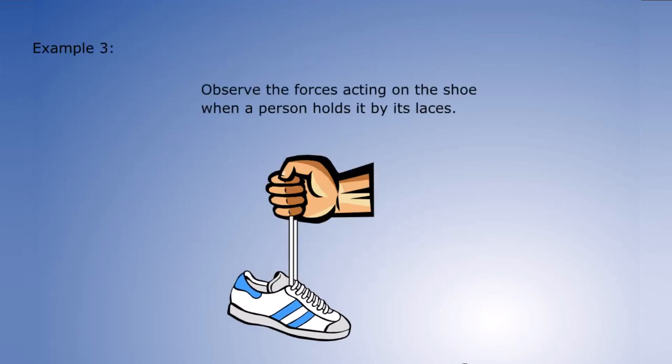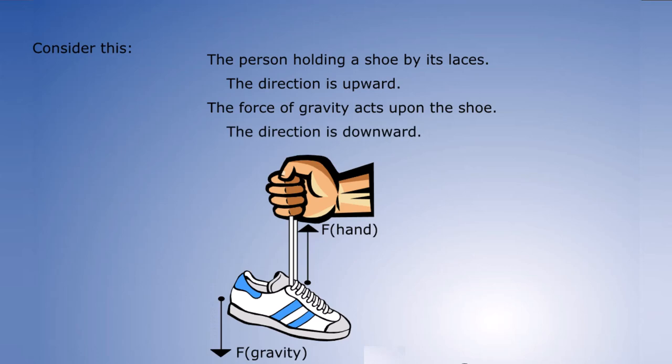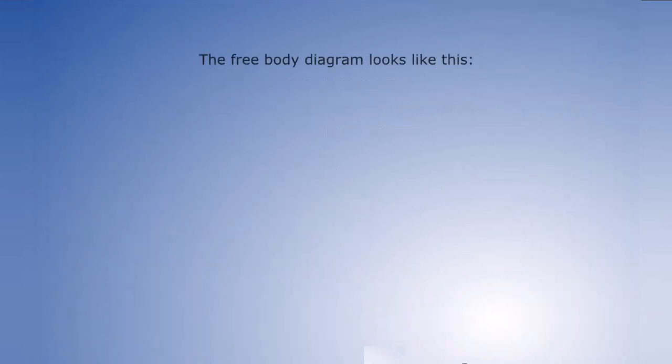Example 3. Observe the forces acting on the shoe when a person holds it by its laces. The person holding the shoe by its laces. The direction is upward. The force of gravity acts upon the shoe. The direction is downward. The free body diagram looks like this.